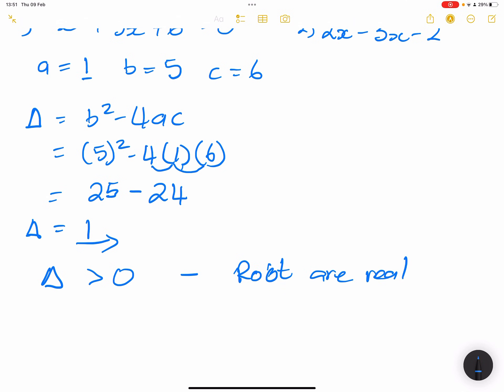But also in this case, 1 is a perfect square. So delta is a perfect square. So we know that if it's a perfect square then we're going to get rational roots. So they are rational.